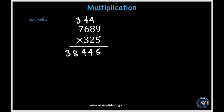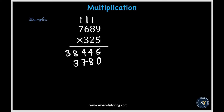Now we're done with the ones digit, so we put a 0 under the 5 and erase the carried numbers to avoid confusion. Now we have 2 times 9 to give us 18; put down 8 and carry over the 1. Then 2 times 8 gives us 16, and 16 plus 1 gives us 17; put down the 7 and carry over 1. Then 2 times 6 gives us 12, and adding 1 gives us 13; put down the 3 and carry over 1. Then 2 times 7 gives us 14, and 14 plus 1 gives us 15; so we put down 15.